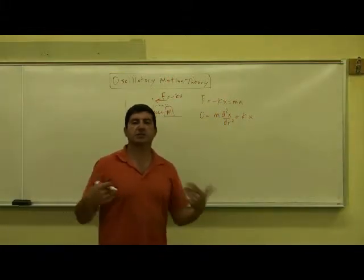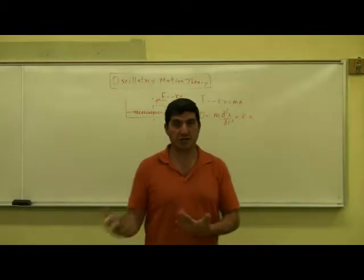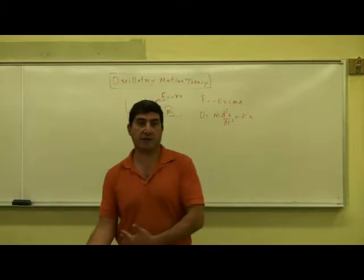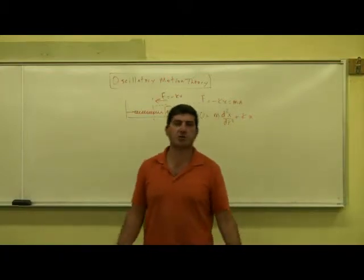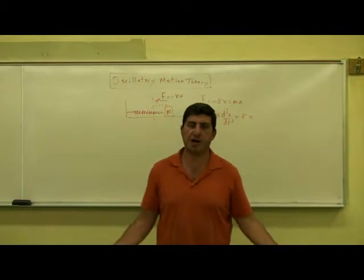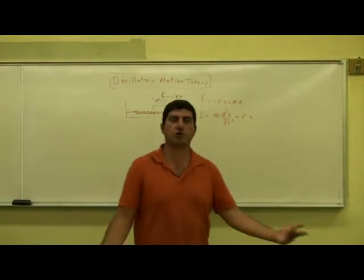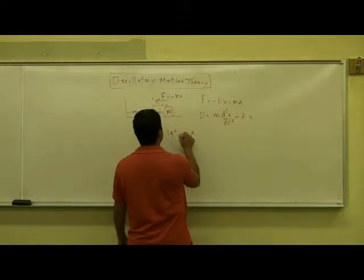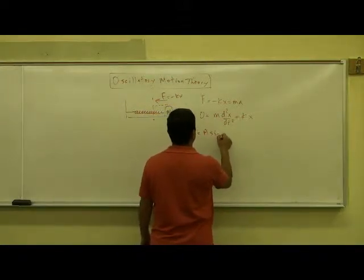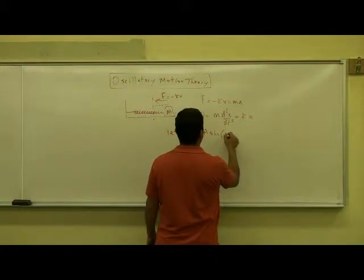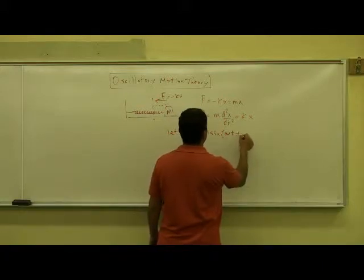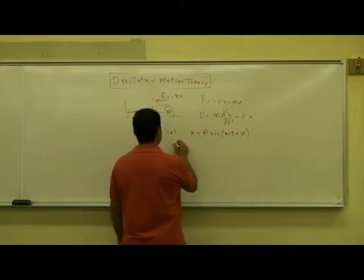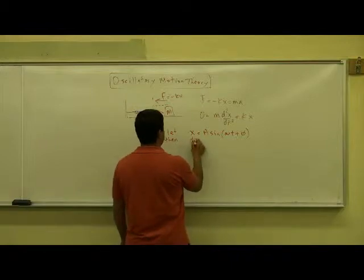What kind of function satisfies that? It's a trig function — either cosine or sine. Some people ask if there's a difference between using cosine or sine, and the answer is no; the difference is only a phase angle of π/2. So let's let x equal A·sine(ωt + φ), where φ is the phase angle.